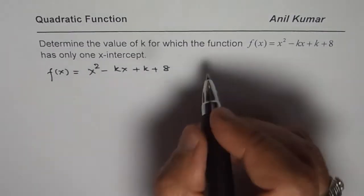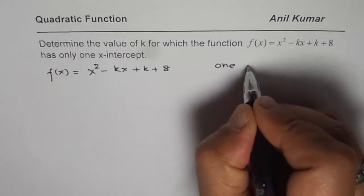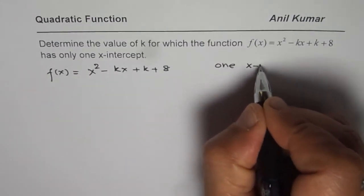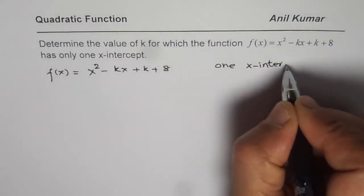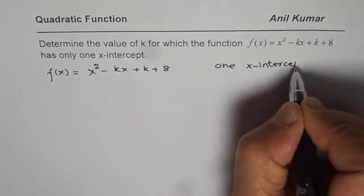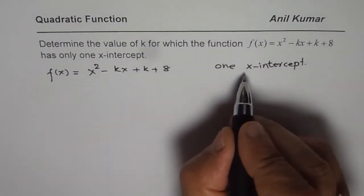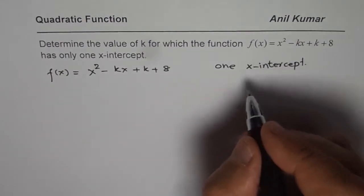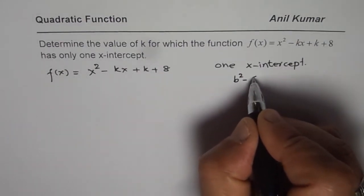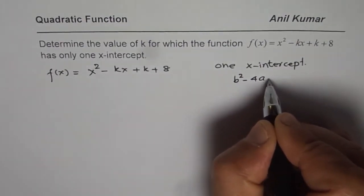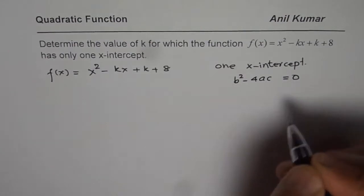What we want is one x-intercept. So how can we do it? Since we need only one x-intercept, that means b² - 4ac should be equal to 0.